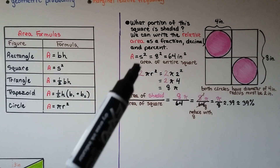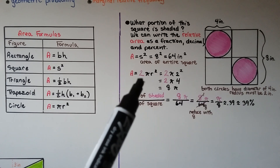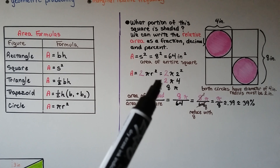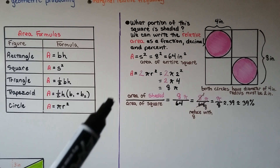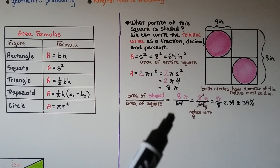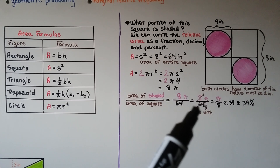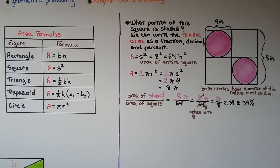For the entire square, we use side squared: 8 squared is 64 inches squared. For the circles, because we have two of them, I multiplied 2 times pi r squared — that's 2 times pi times 2 squared, which gives us 8 pi. We write the area of the shaded circles over the area of the square: 8 pi over 64. Dividing out common factors of 8 gives us pi over 8, which on our calculators is approximately 0.39, or approximately 39%. So the relative area of the shaded portion is 39%.